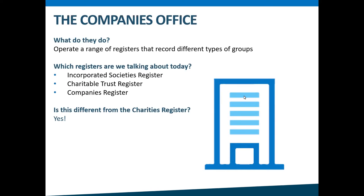Before we go on, we'll explain what the Companies Office is, as we'll mention them throughout the webinar. They're a government agency that looks after a number of registers — today we are talking about the incorporated societies register, the charitable trusts register, and the companies register. People often get confused about the Charities Register and the registers that the Companies Office looks after. Only registered charities are listed on the Charities Register. The Companies Office looks after a much wider range of registers, and if your charity is incorporated it will be listed on both.